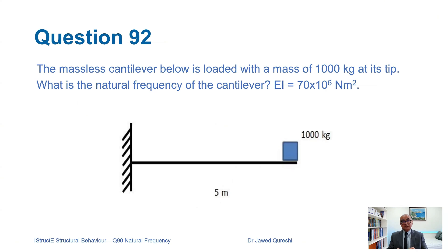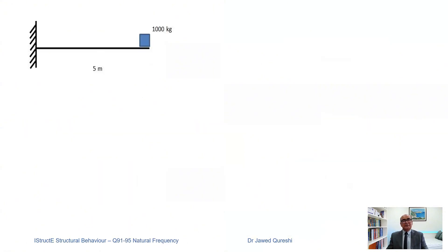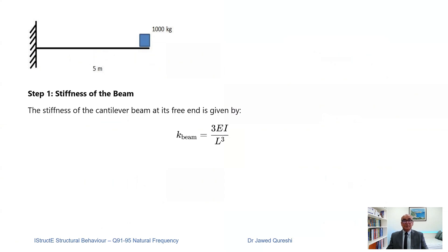Let me move to the next question. The second example: a massless cantilever beam with a mass of 1000 kg at its tip — what is the natural frequency? EI is 70×10⁶. In this case we have a cantilever beam, so the only change will be to apply a different stiffness formula. There are four options to choose from. I suggest you pause this video and have a go at this question using the same formula mentioned earlier.